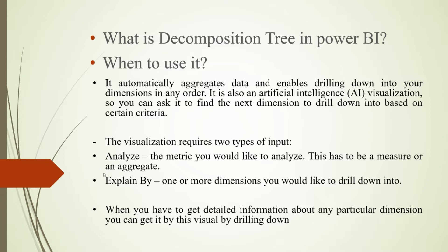In our scenario, we need to add product category, product subcategory, and product name in the Explain By field so that we can drill down and analyze by those dimensions against sales. When you need detailed information about any particular dimension, you can get it from this visual by drilling down. If we want a deep understanding of sales for particular product categories, subcategories, and product names, we can use the decomposition tree.